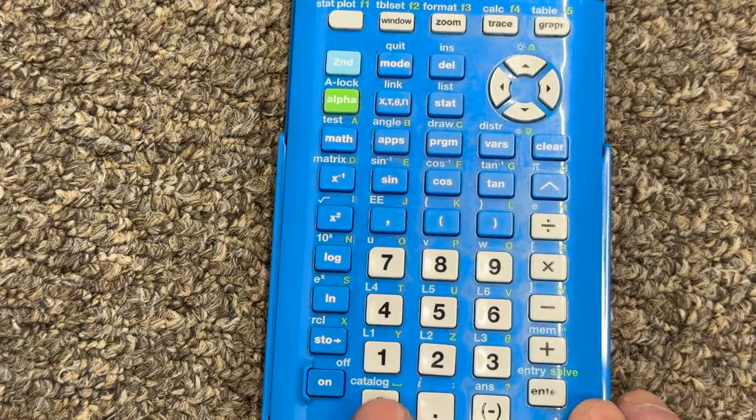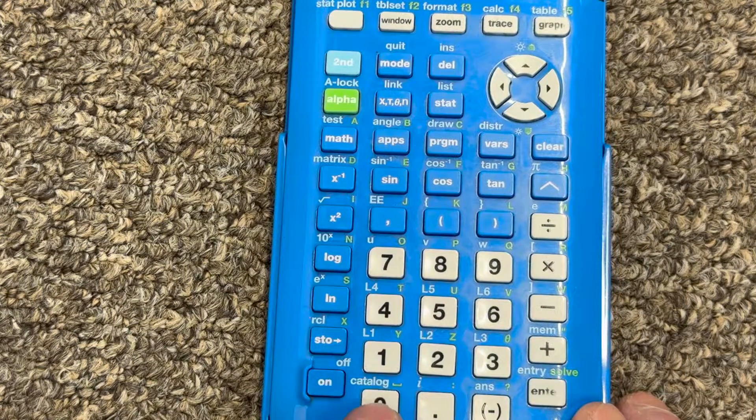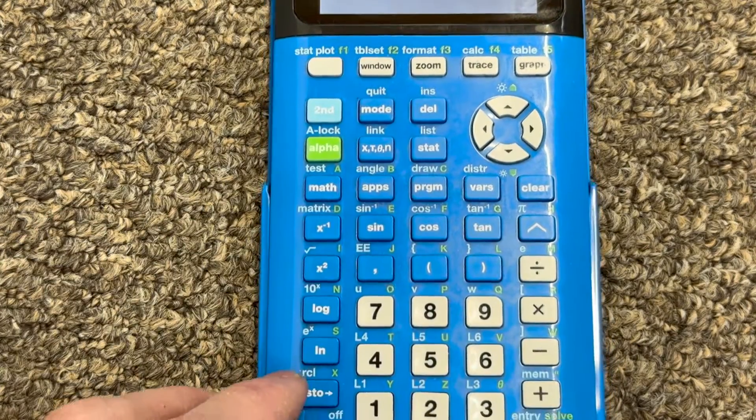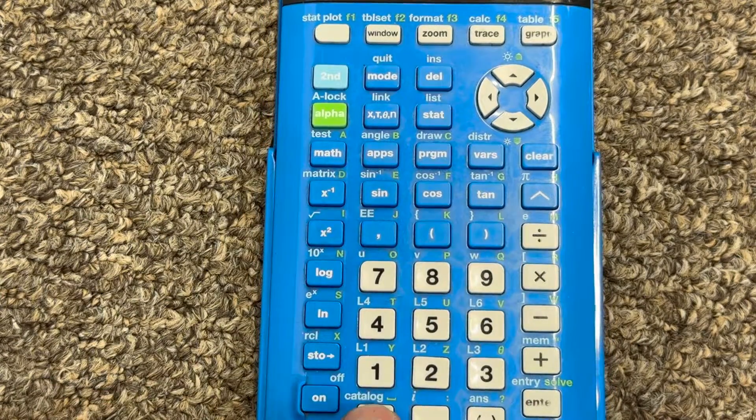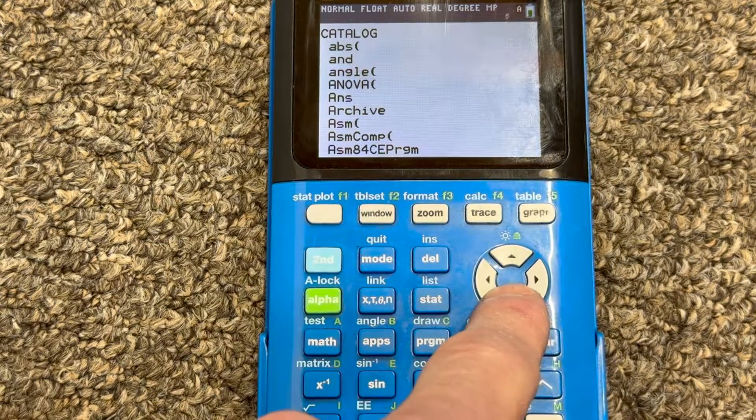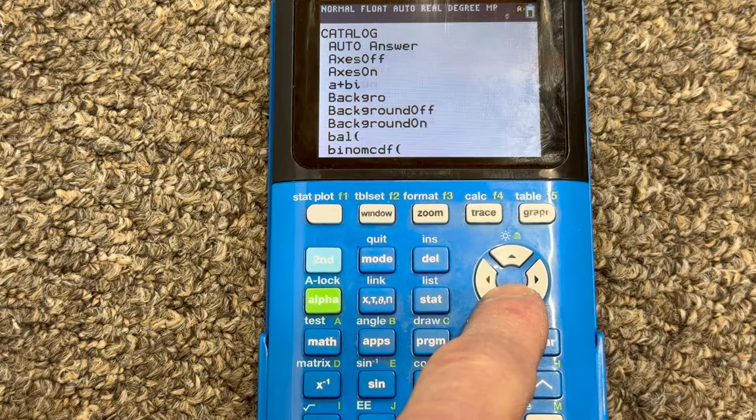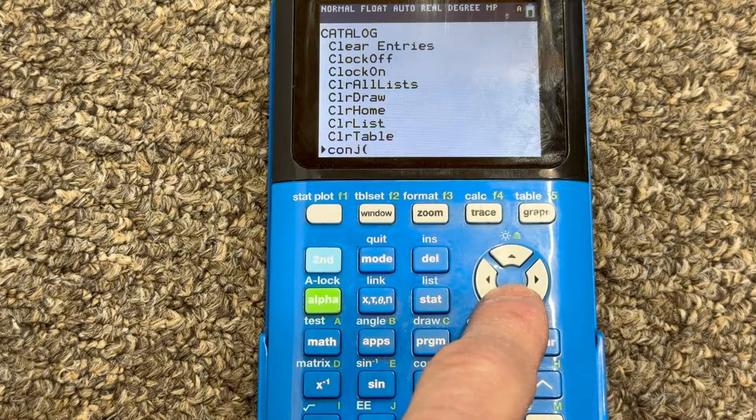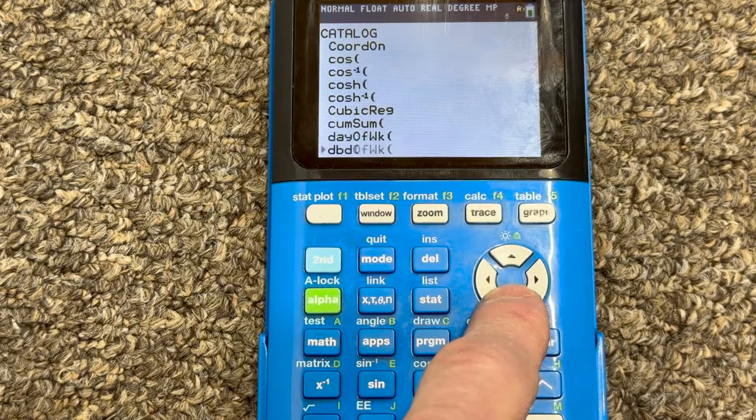See how it says catalog just above the zero button. And everything that's written above the buttons, you're going to have to press the second key. So I'm going to press second, and then I'm going to press this catalog button right above the zero. And so now you can see it brings up a list. Now I'm going to arrow down, just going to hold the arrow key. I'm going to go down to where it says diagnostic on. So alphabetical, diagnostic on is what we're looking for.